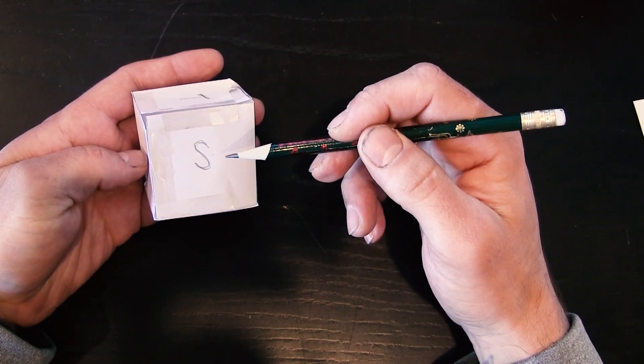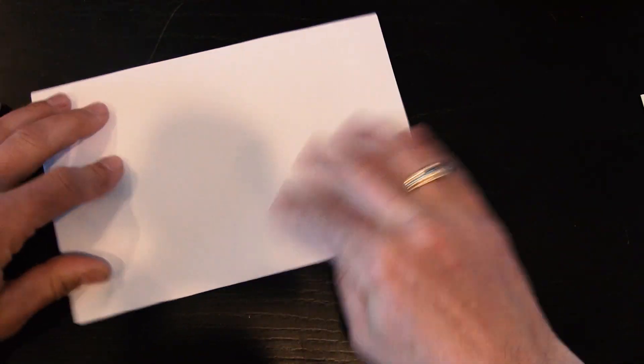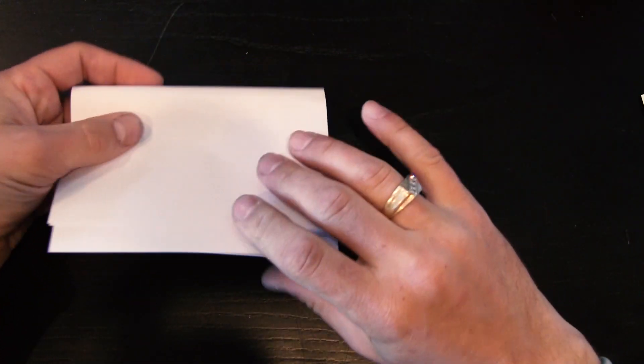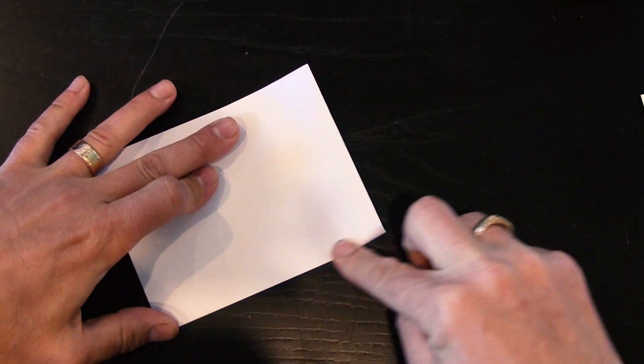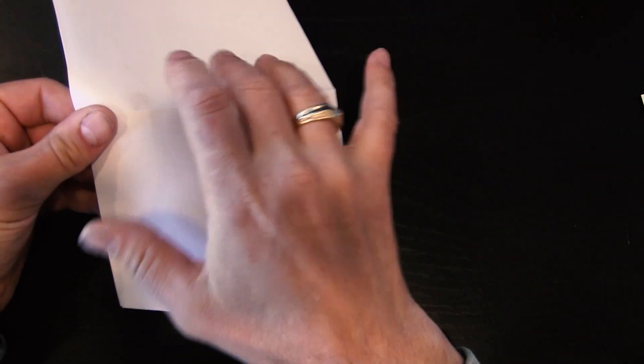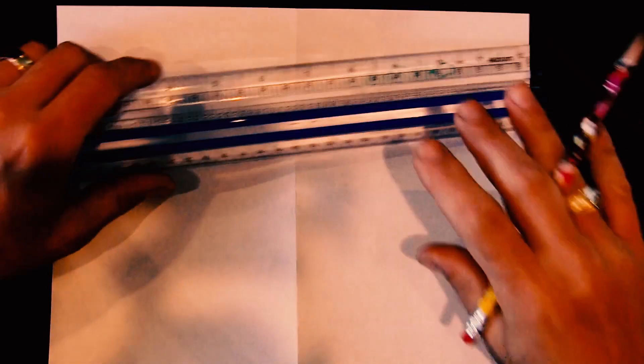Next you're going to need to get a sheet of paper and you're going to need to fold it into quadrants. So your first fold is just like a hamburger, and then you're going to fold it like a hamburger again. Unfold this and now you've got an XY axis.